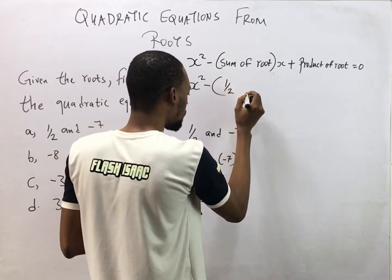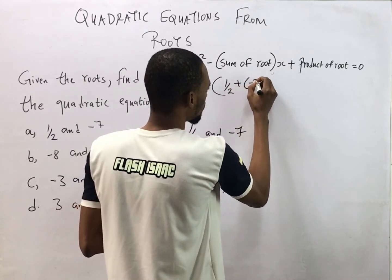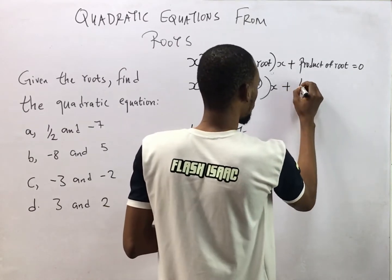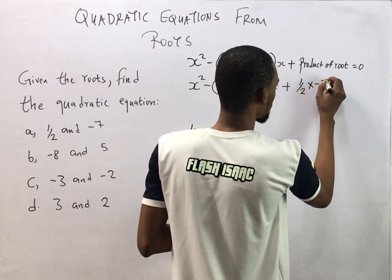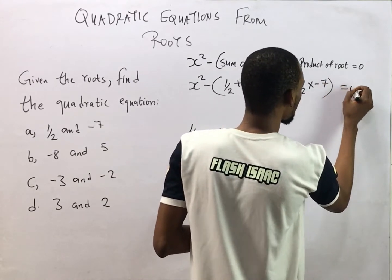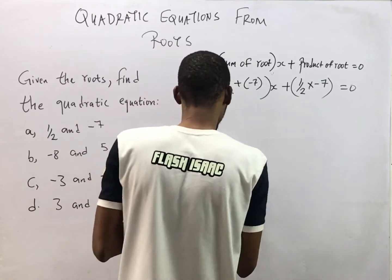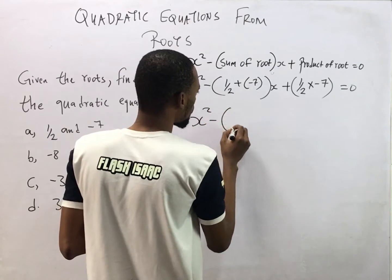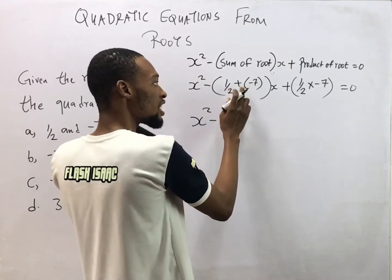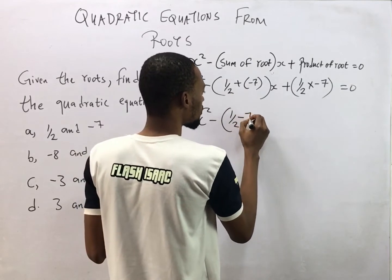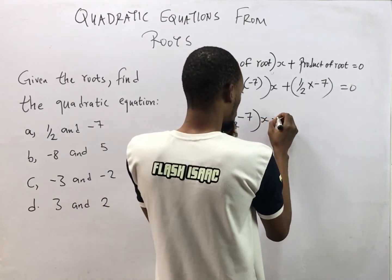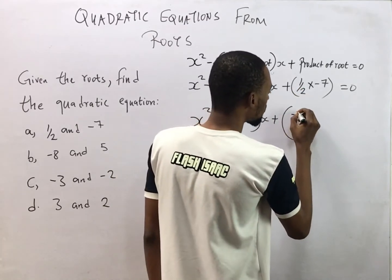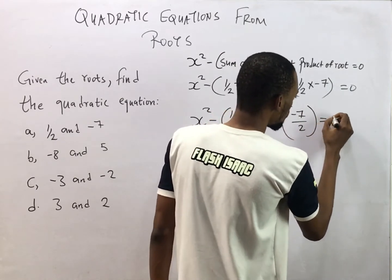Substituting into the quadratic equation formula, we have s² minus (1/2 + (-7))s plus (1/2 × (-7)) equals zero. This gives us s² minus (1/2 - 7)s plus (-7/2) equals zero.